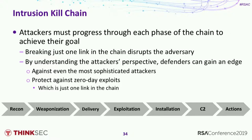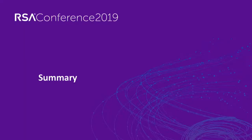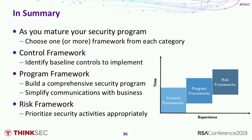In summary: as you mature your security program, make sure you choose one or more frameworks from each of the three categories. The control framework is your list of ingredients — what do we need to implement. The program frameworks give you a higher-level view to better communicate what you're doing from an overall security perspective. And the risk frameworks help you understand how to prioritize and decide what to actually do first.